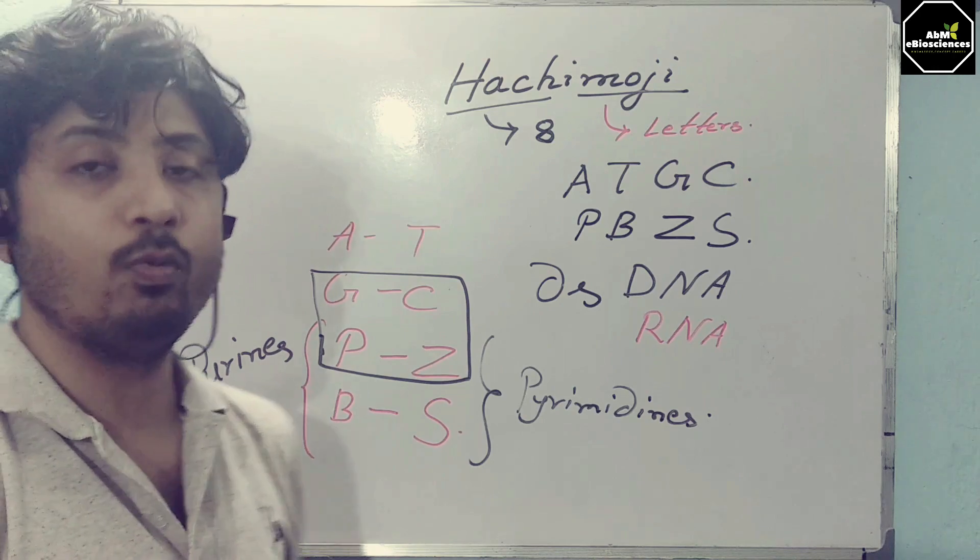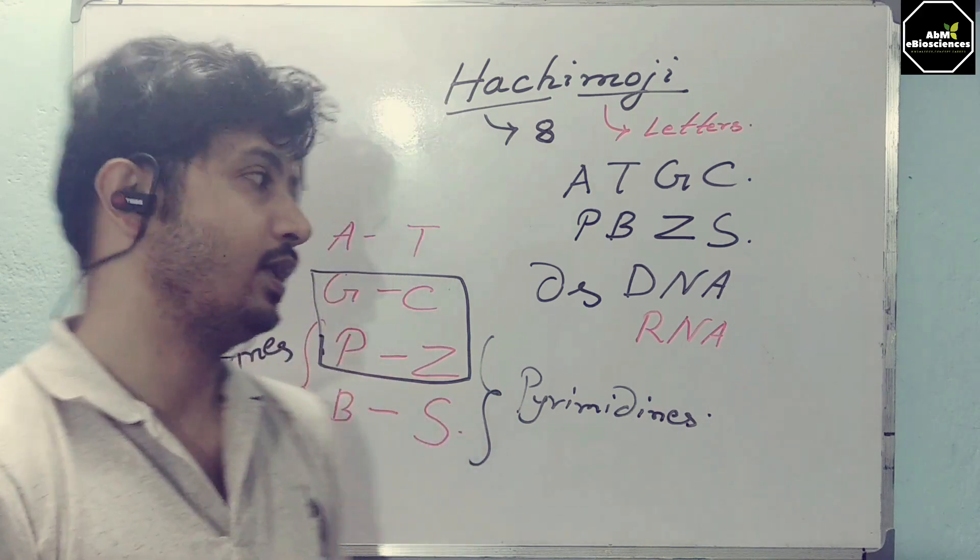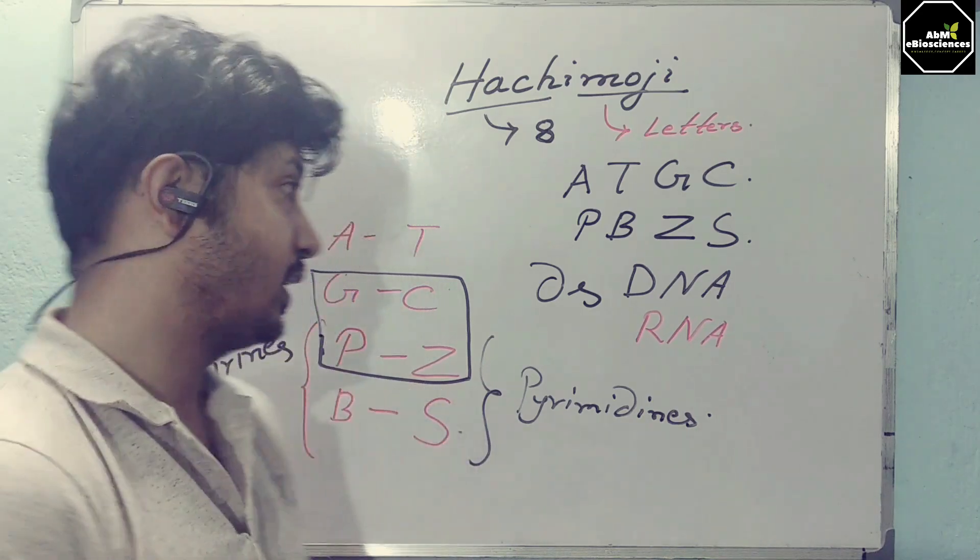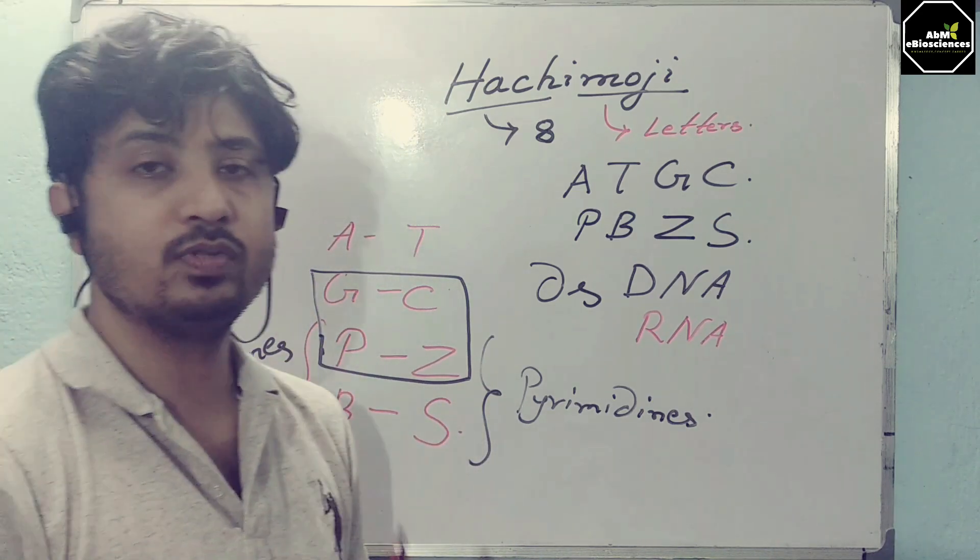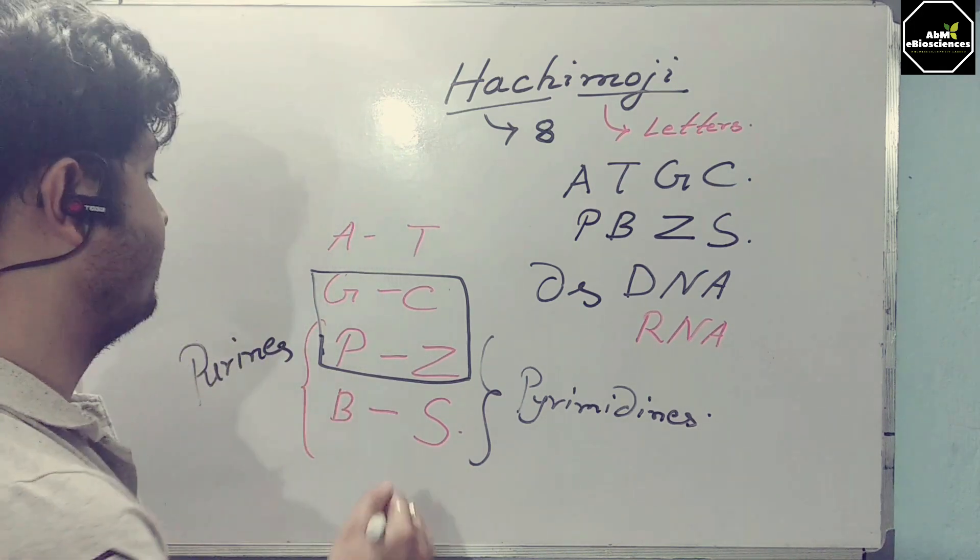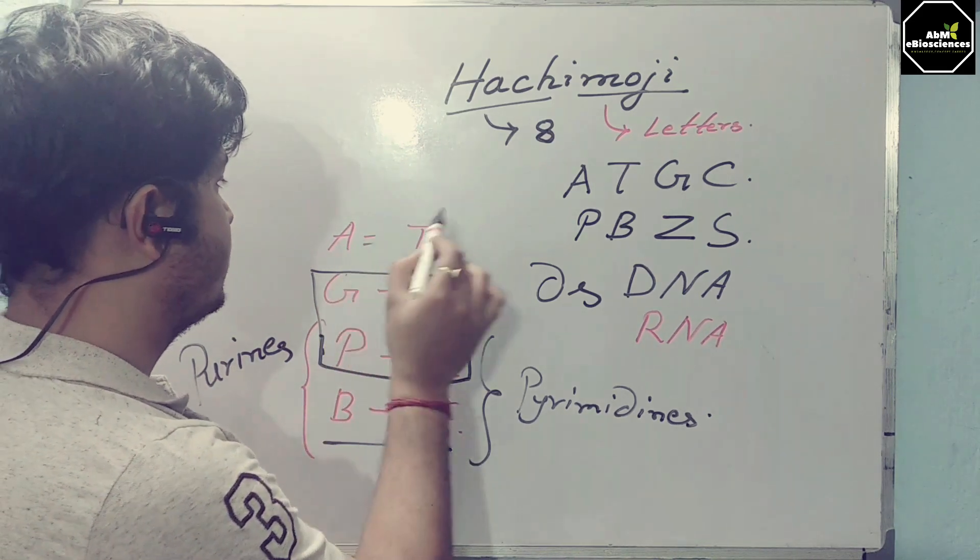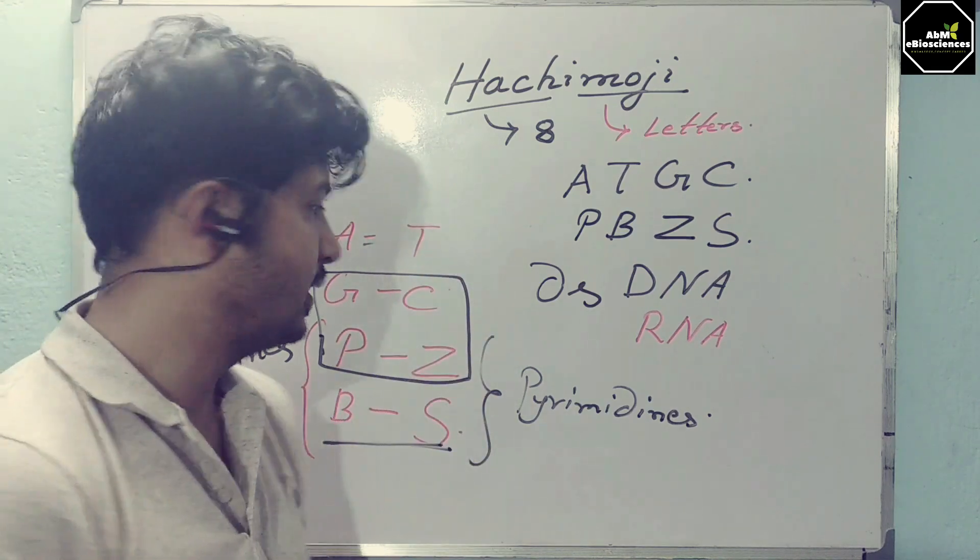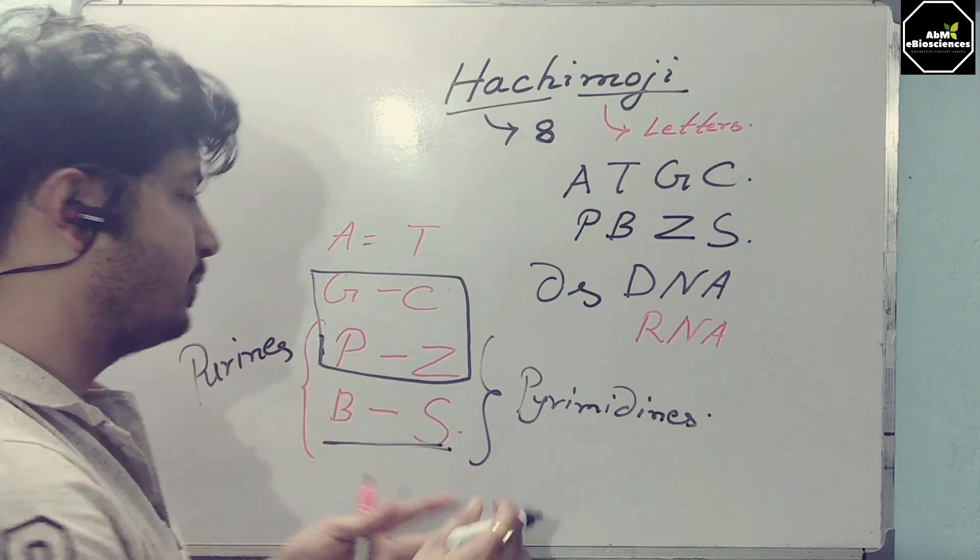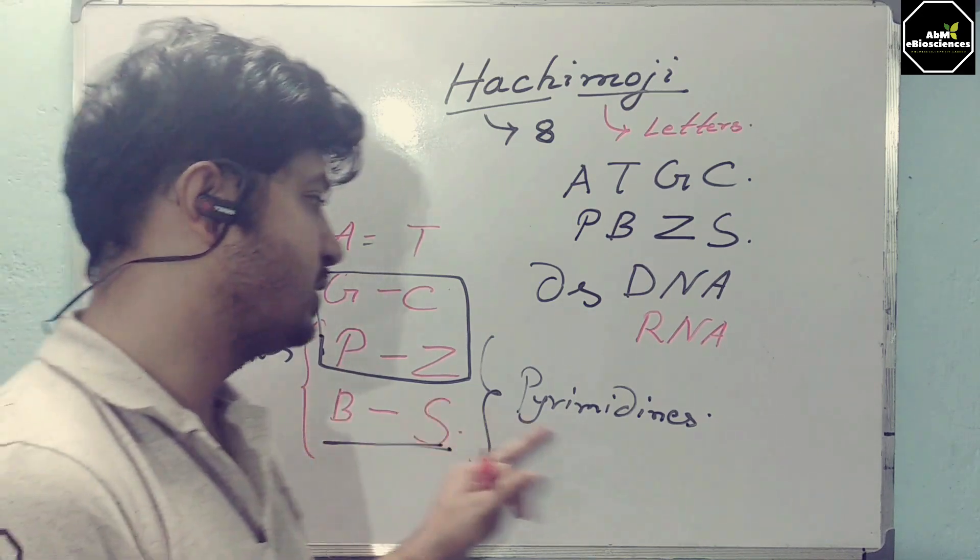In cases of bonding, we know that these bases bond through hydrogen bonds. The G and C bonding is much tougher and stronger bonding, which can be seen in P to Z bonding, whereas the weak A to T bonding is comparable with B to S bonding. So A pairs with T; inversely, B pairs with S. G pairs with C means it's comparable to P pairs with Z. So PB is purine, ZS is pyrimidine.